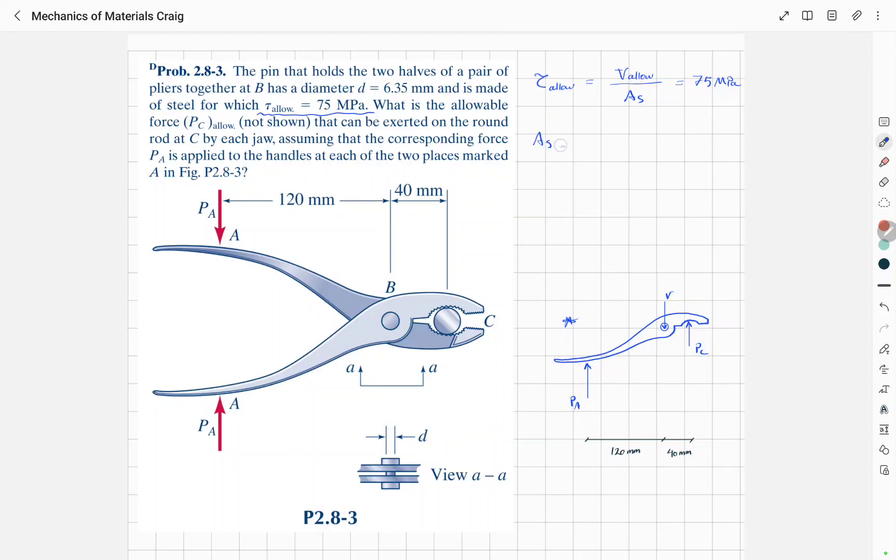And we know As is pi divided by 4 d to the power of 2, which is pi divided by 4 times 6.35 times 10 to the power of negative 3 meters squared. So As is approximately equal to 3.17 times 10 to the power of negative 5 square meters.